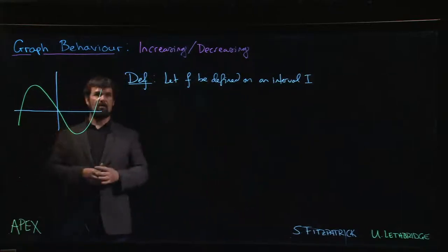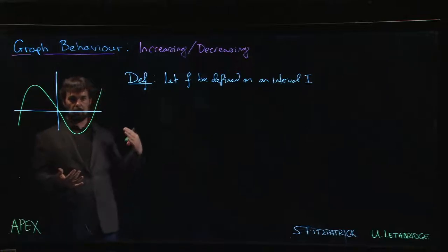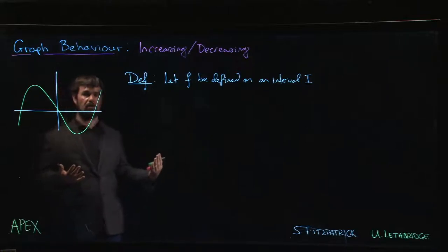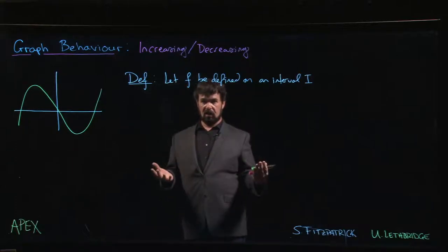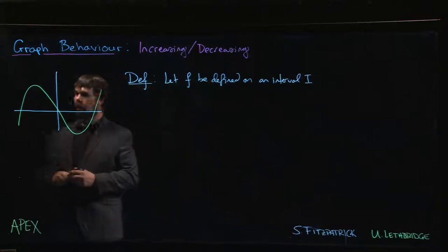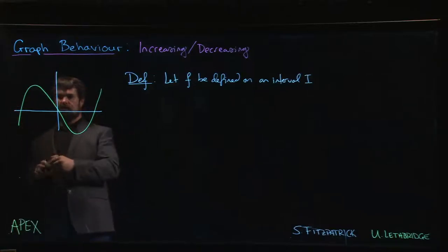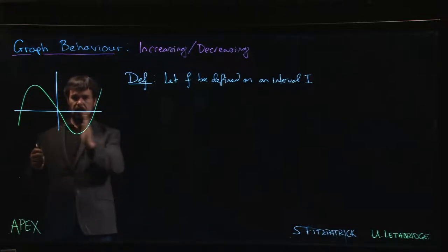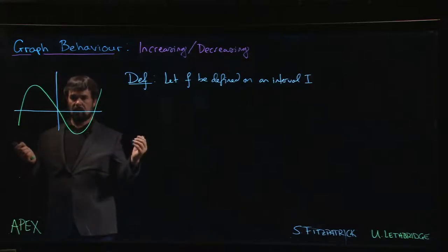If you have the graph of a function, what should it mean for a function to be increasing or decreasing? When we say increasing or decreasing, we're talking about y-values — the output value. A function is increasing if the y-values are getting bigger as we move from left to right, and decreasing if the y-values are getting smaller as we move from left to right.